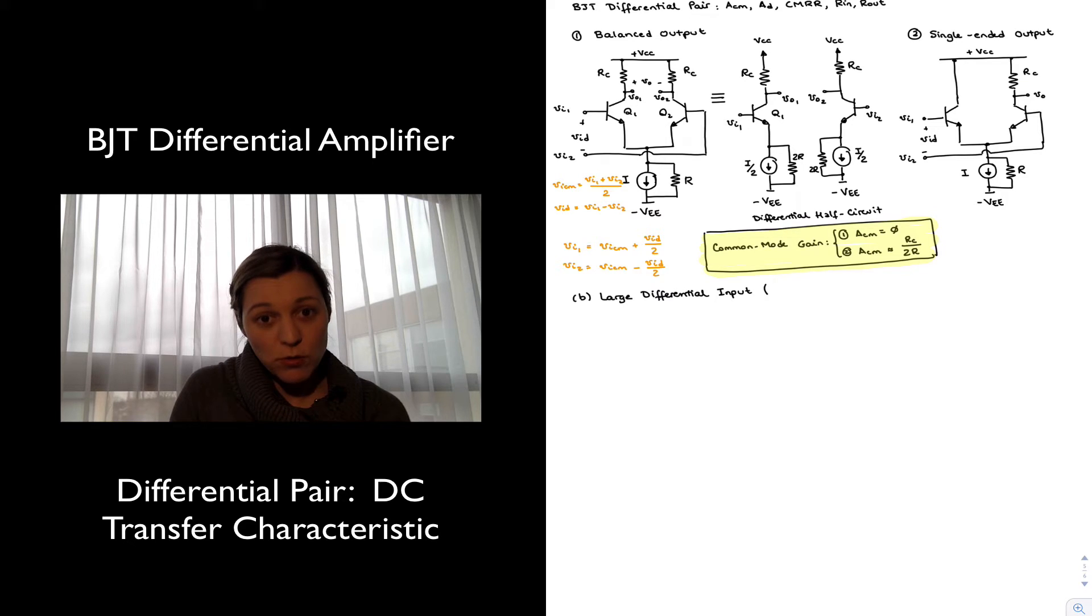The reason for that will become apparent when we finish this analysis but essentially we are interested in the operation of the circuit in the linear region. So basically in a region for which we can assume the amplifier to be a linear amplifier. And so as soon as our differential input signal goes beyond this range we will see that the amplifier stops acting in a linear manner. Therefore it's outside of our range of interest. That's why we call it large.